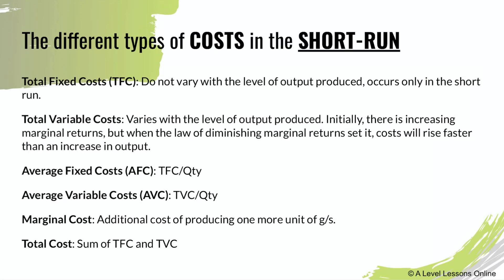Now let's move on to the actual costs. In the short run you have: total fixed cost, total variable cost, average fixed cost, average variable cost, marginal cost, and total cost. Note that some of these can apply in the long run as well. Total fixed cost, as the name says, is fixed — it does not vary with the level of output produced and it occurs only in the short run.